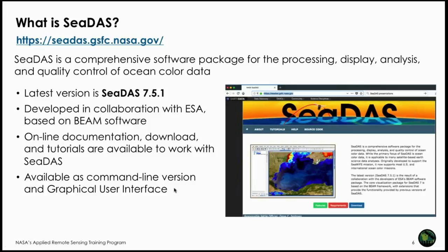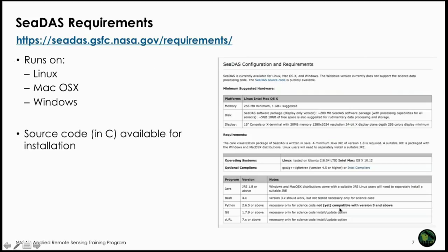CDAS is available as a graphical user interface, which we'll use here, but there is also a command line version for bulk processing. It requires Java, Python, Git, curl, etc., and is available for Linux, Mac OS X, and Windows. The original source code is in C and is also available. Configuration requirements are listed on the CDAS site.